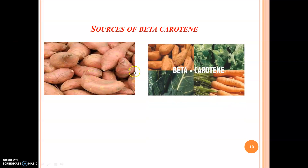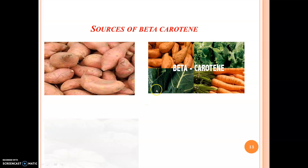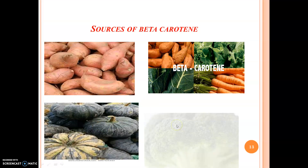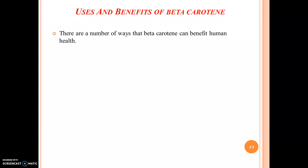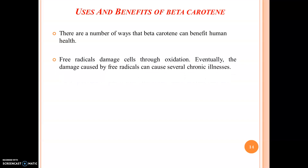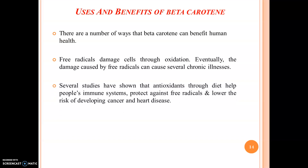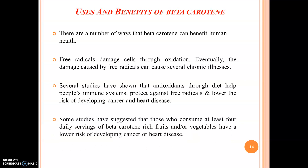Sources of beta carotene include sweet potato, carrot, green vegetables, pumpkin, and broccoli. There are a number of ways that beta carotene can benefit human health. Free radicals damage cells through oxidation, eventually causing several chronic illnesses. Several studies have shown that antioxidants through diet help people's immune systems protect against free radicals and lower the risk of developing cancer and heart disease. Some studies suggest that those who consume at least four daily servings of beta carotene-rich fruits and vegetables have a lower risk of developing cancer or heart disease.